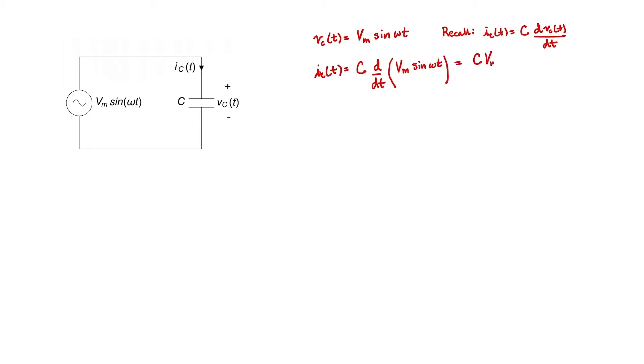There is a trigonometric identity that relates sine and cosine. So I can just write the cosine of omega t as the sine of omega t plus 90 degrees. We can see that there's a 90 degrees or pi over 2 radian phase difference between the voltage and the current in a capacitor.